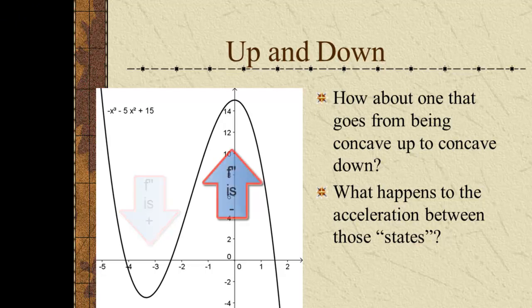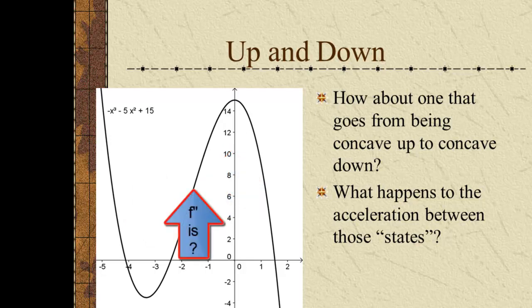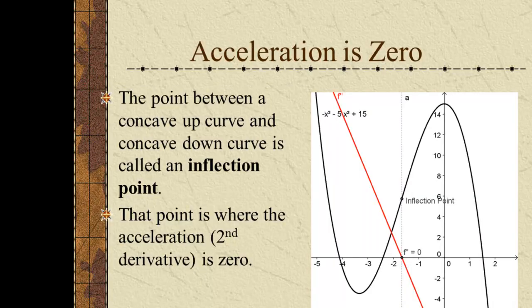When it's concave down, the second derivative is negative. Well, what is it between those two states when it goes from positive to negative? It's just where the second derivative is zero.